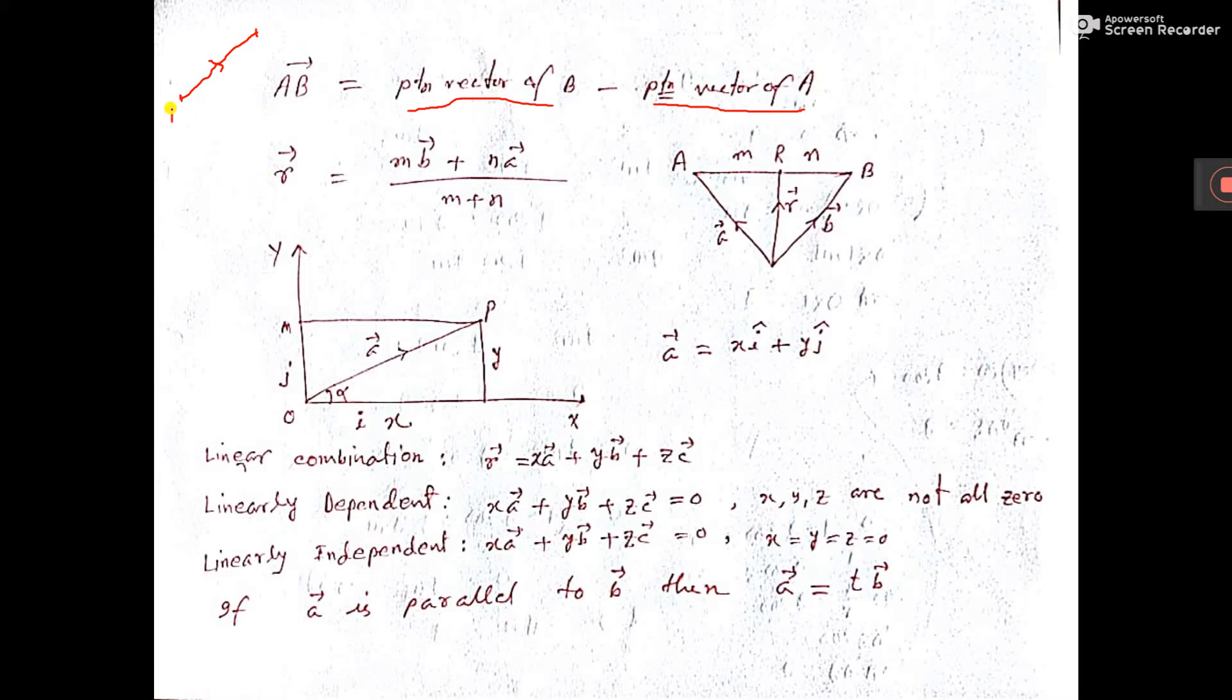Let's say here, this is point A and this is point B. And its position vector given, this is small a. And its position vector given, this is small b.